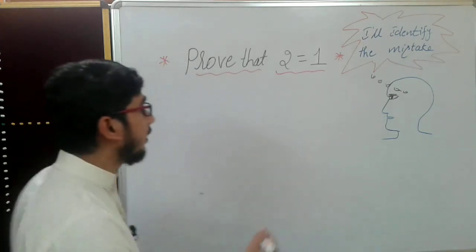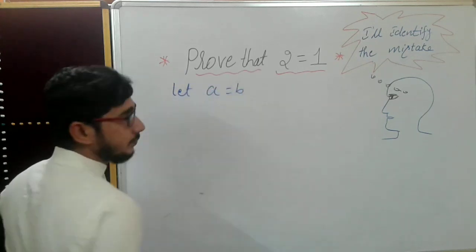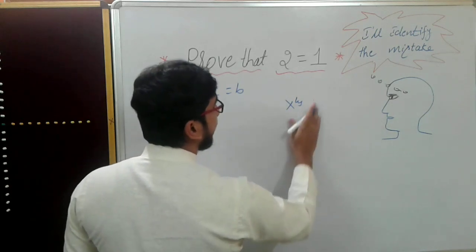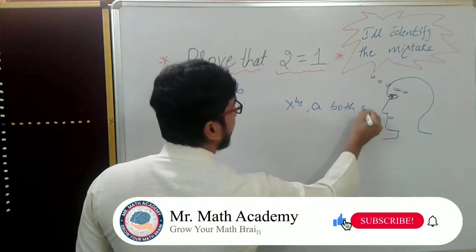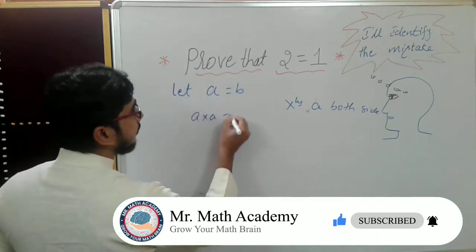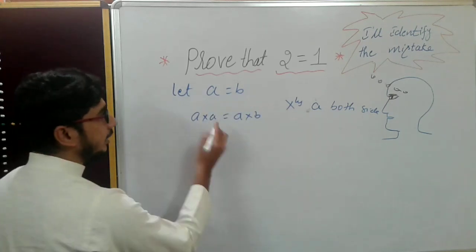Let us consider: let a is equal to b. So what I will do is multiply a on both sides. So what will happen? a times a, which is equal to a times b.